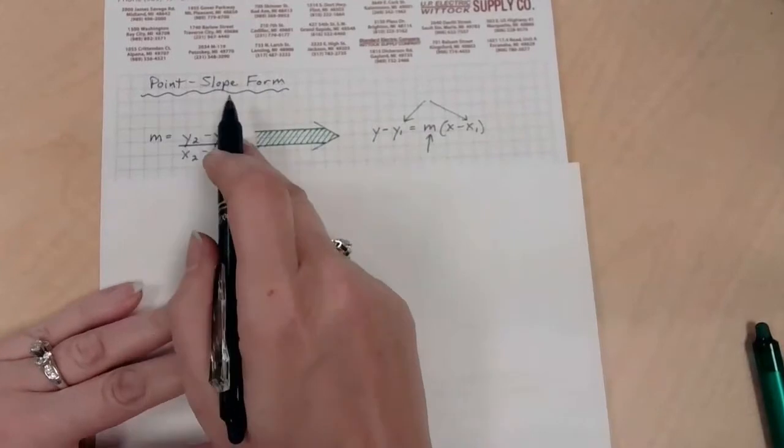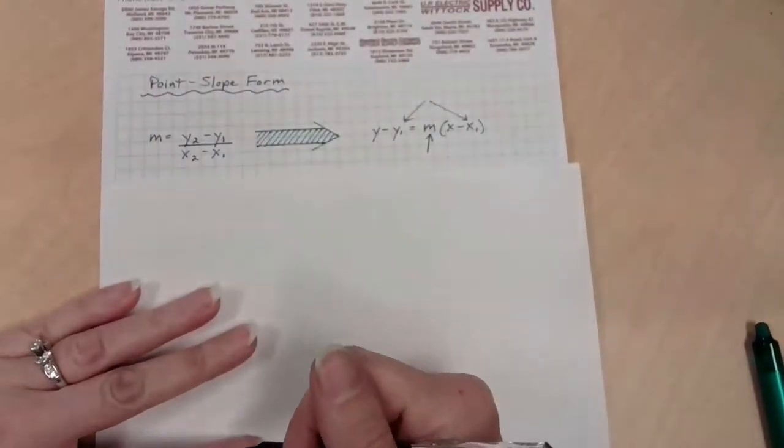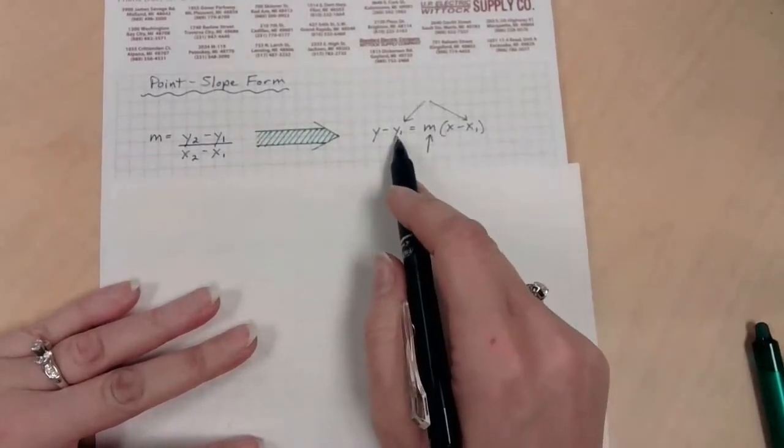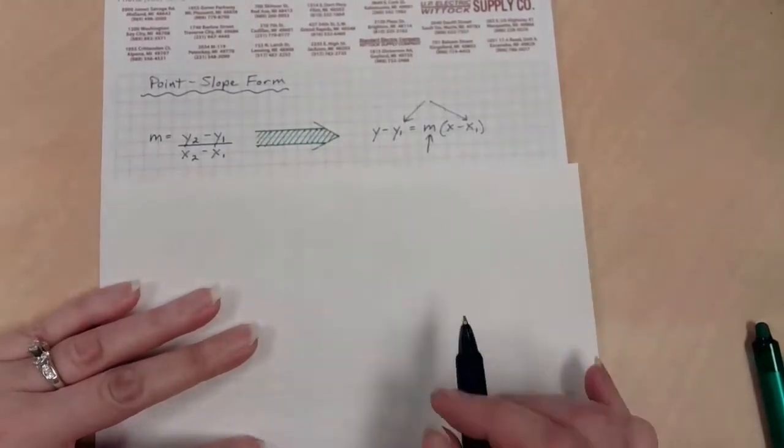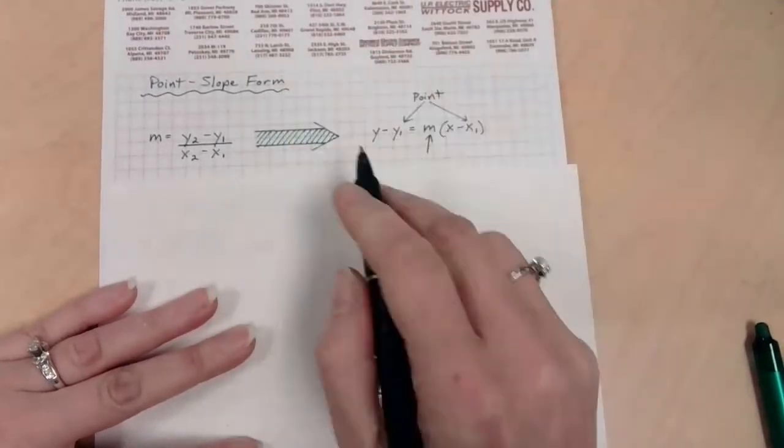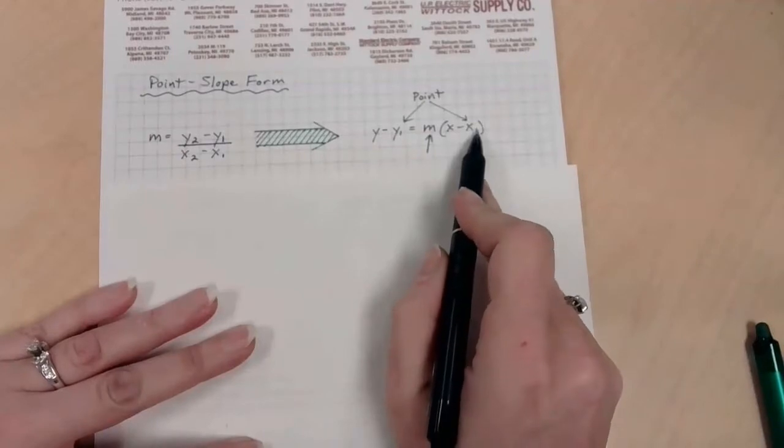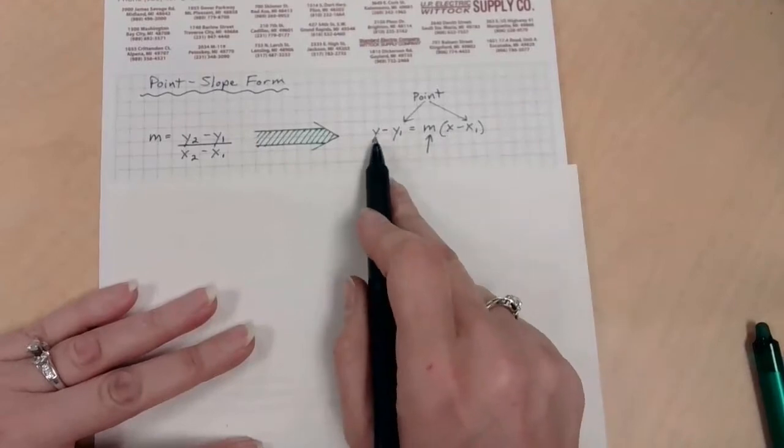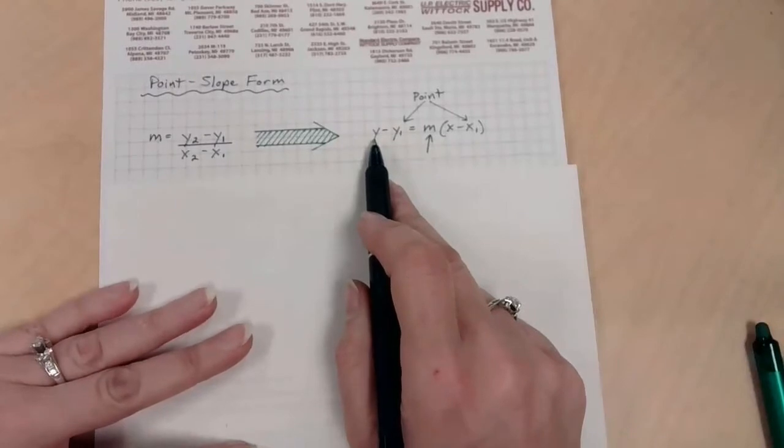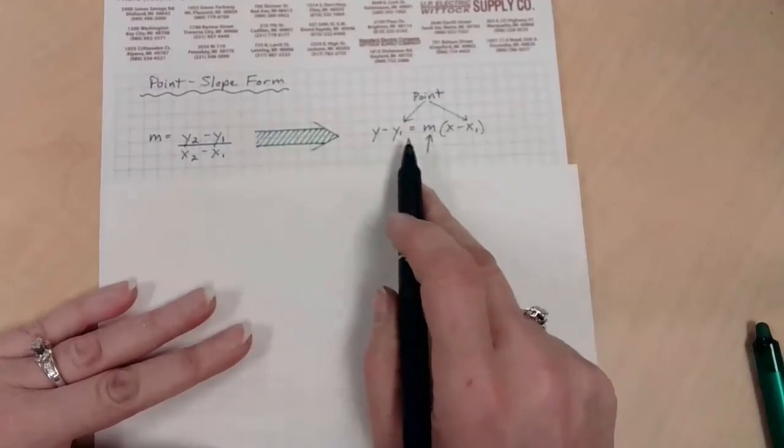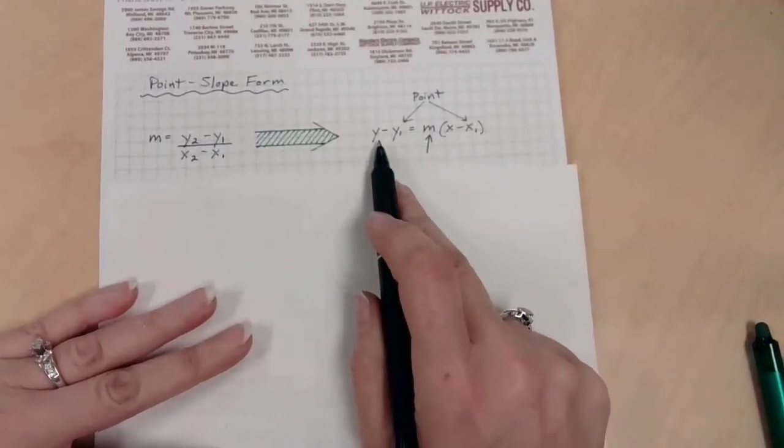So if we're looking at point-slope form and going, hmm, where did it get its name from? Well, I bet there's a point involved. Specifically, I've drawn arrows to the y sub 1 and the x sub 1. Ladies and gentlemen, that is our point for point-slope form. Often, we want to have numbers for these two. x by itself, while it is a variable, we're going to leave it as an x. And the y by itself, again, we're going to leave it as a variable, because we'd like to have the y.